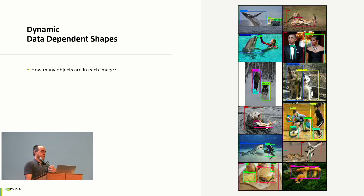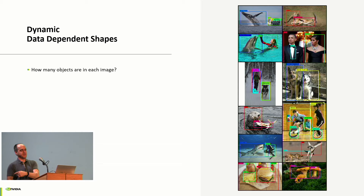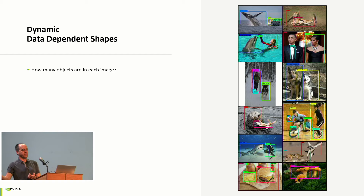The next hard problem for shapes is data-dependent shapes. Originally we had static shapes, then figured out dynamic shapes, but how do you optimize for shapes where you don't know the size until you actually execute the neural network? For example, how many objects are in each image? The number of objects determines what the rest of the neural network will do. Optimizing for data-dependent shapes is very important for networks with variable outputs from the middle of the network.